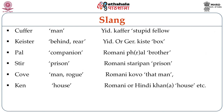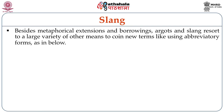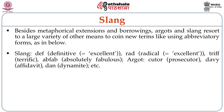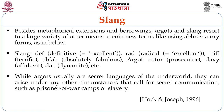The multicultural, multi-ethnic and multilingual nature of the sources of English argot can be studied from the selected examples given in the table. Besides metaphorical extensions and borrowings, argots in slang resort to a large variety of other means to coin new terms, like using abbreviatory forms — in slang: 'def' is 'definitive' or 'excellent', 'rad' is 'radical', 'trif' is 'terrific', etc. While argots usually are secret languages of the underworld, they can arise under any other circumstances that call for secret communication, such as prisoner of war camps, slavery, cults and so on.